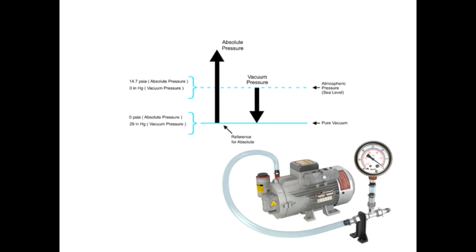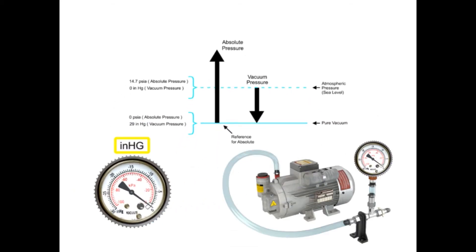The unit of measurement for vacuum is inches of mercury. At sea level, the measurement scale indicates 0 inches of mercury. And at pure vacuum, the measurement scale indicates 29.92 inches of mercury.